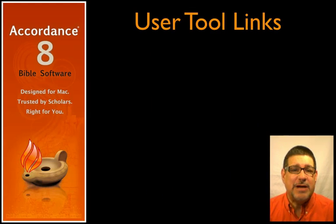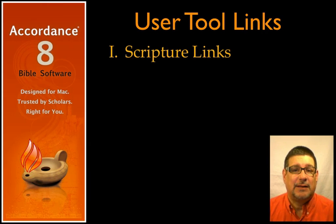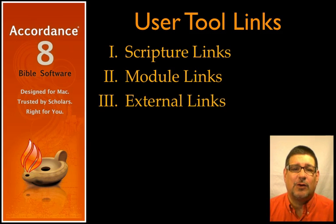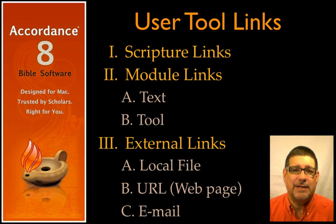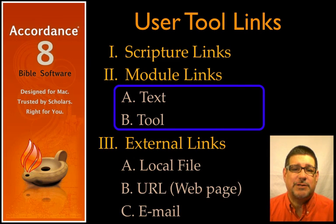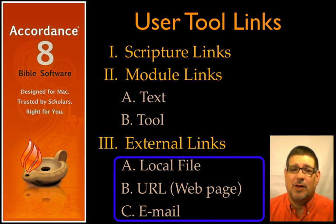We can add three different kinds of links to our User Tools: Scripture links, links to other Accordance modules, and links to external or non-Accordance files. Several of these have subcategories. Module links can either be text or tools, while external links can be to files on a local hard drive, a website, even an email. Each kind of link has its own specific format.